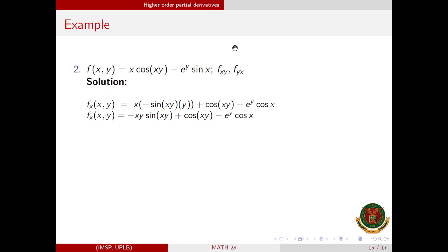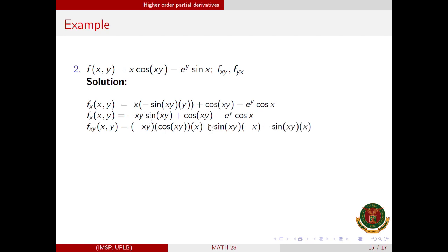Then we differentiate f_x with respect to y. Here, −xy and sin(xy) require the product rule again: left·(derivative of right) + right·(derivative of left). The derivative of cos(xy) with respect to y is −sin(xy) times x by the chain rule, minus e^y · cos(x), since cos(x) is a constant and the derivative of e^y is e^y. So f_xy equals this expression.